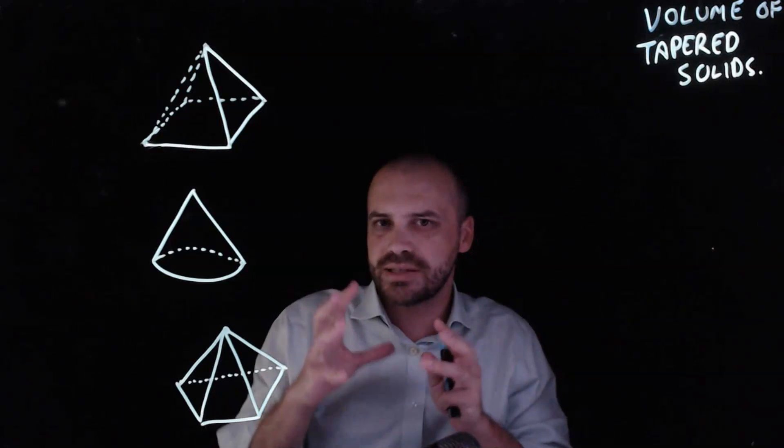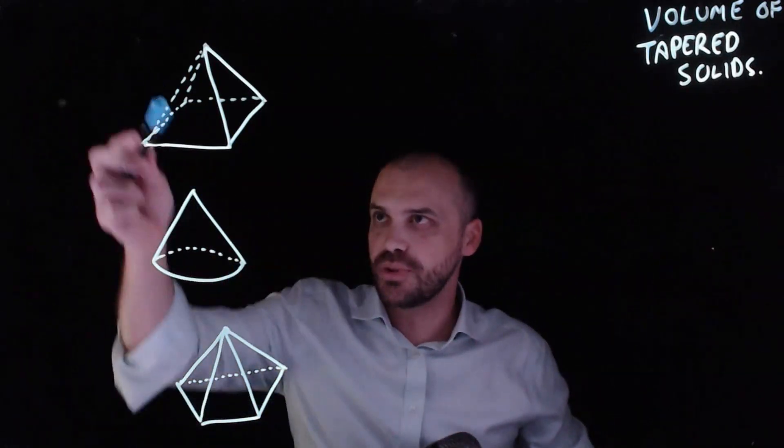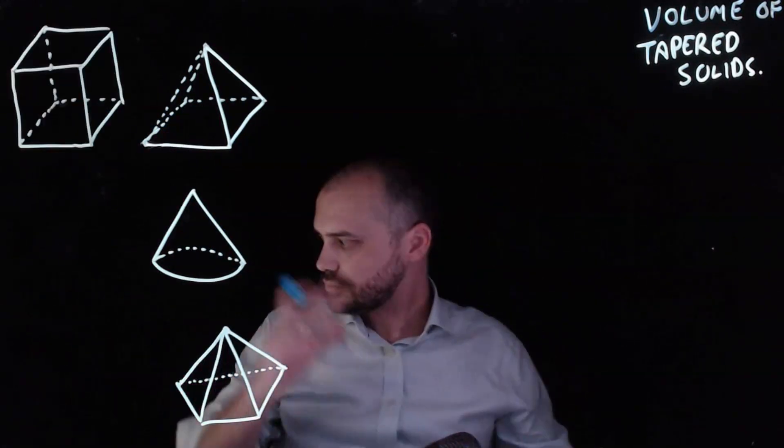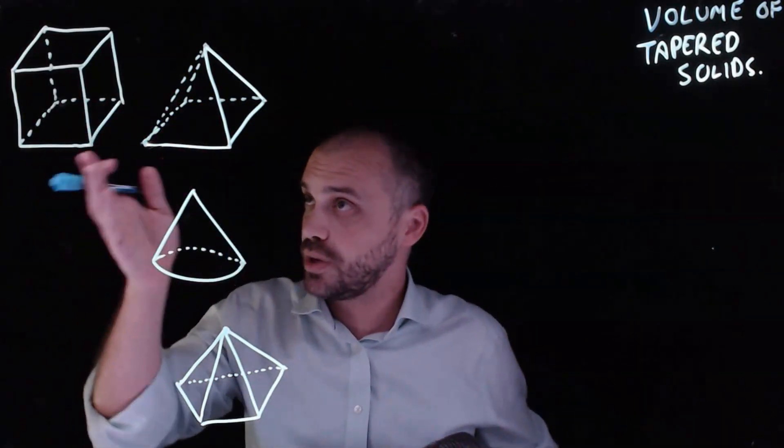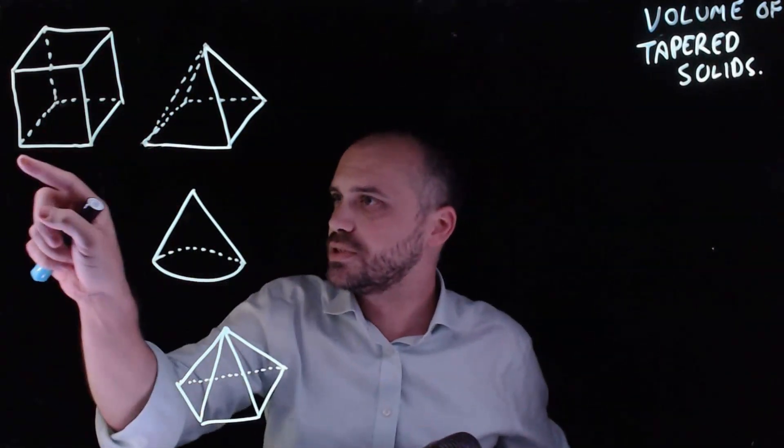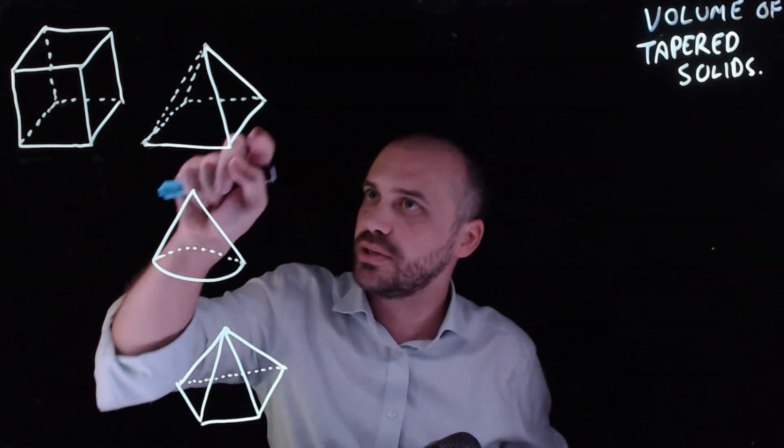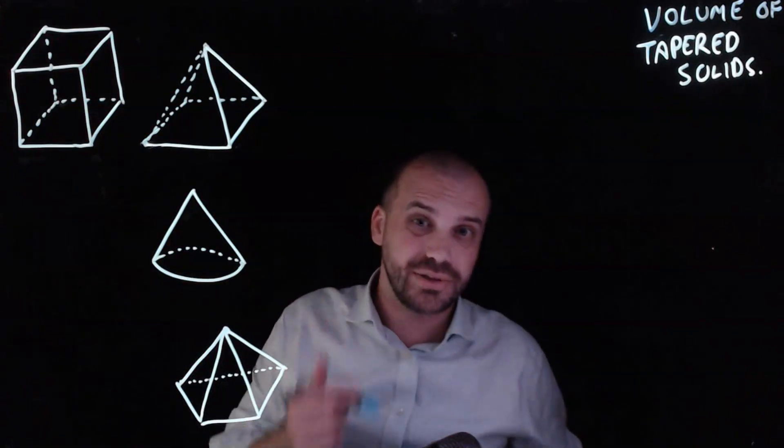Now you can think of them as having a parent that is a prism. So let's draw the parents of these. The parent of a square-based pyramid is a square-based rectangular prism or a square-based prism. You can see that they have the same length here, the same length here and the same height or at least I'm telling you that right now.